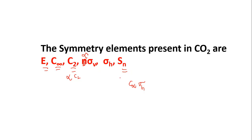In today's lecture, three different examples were examined: first, ammonia — a non-planar, trigonal pyramidal molecule; second, BF3 (or BCl3) — a planar, trigonal planar molecule; and third, carbon dioxide — a symmetric linear molecule. We have learned about the symmetry elements present in each of these molecules.